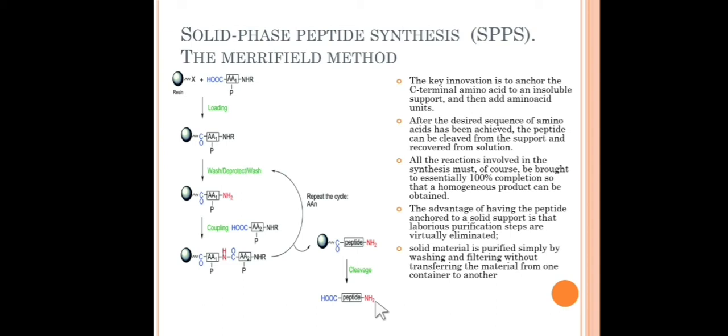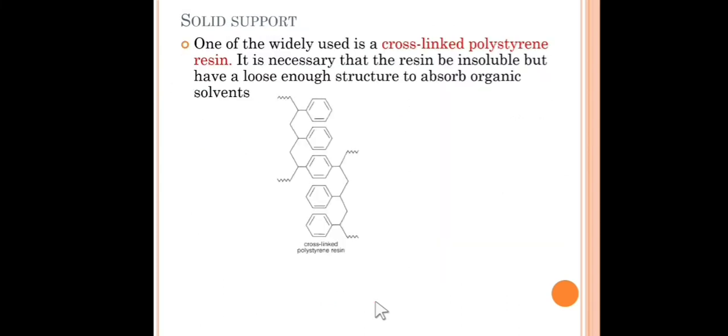This is a very nice and commonly used method giving good yield without any mixtures. Let's see how the solid supports and other steps are involved. Solid supports, one of the most widely used is cross-linked polyester resin. It is necessary that the resin must be insoluble but loose enough structure to absorb organic solvent.